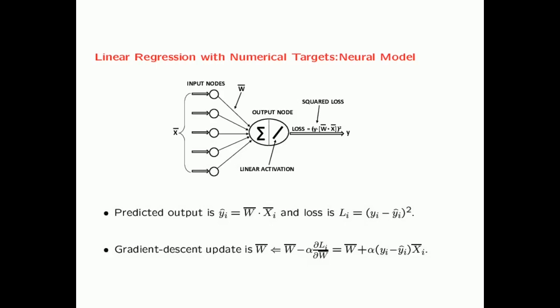Here I have shown the neural model for linear regression with numerical targets. The architecture is identical to the perceptron — everything is exactly the same. The only difference is in the nature of the loss function. Now we are using the squared loss, taking the difference between the predicted value of yi and the observed value, squaring it to get the loss for a particular training instance. Based on this loss function, you can get a gradient descent update — the gradient of the loss with respect to the weight vector — and subtract that from the weight vector after multiplying by the learning rate alpha.